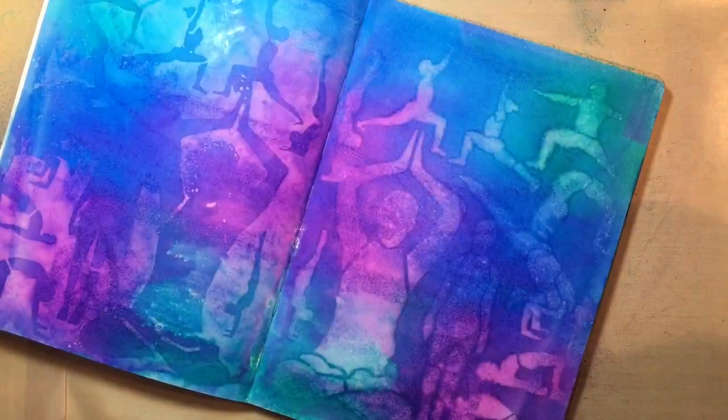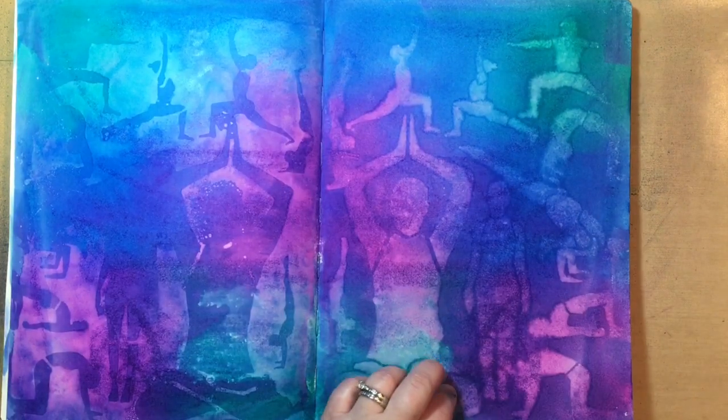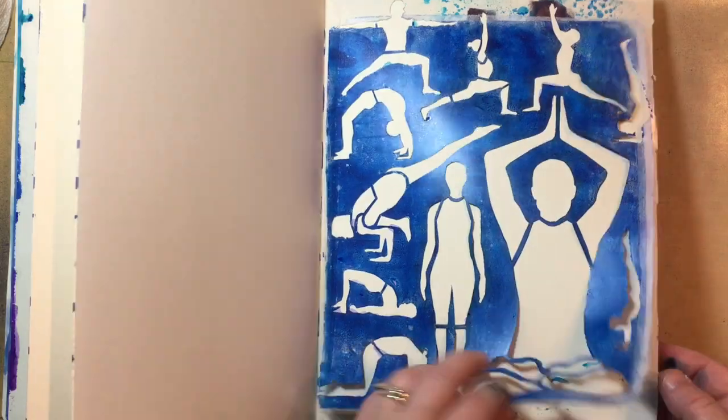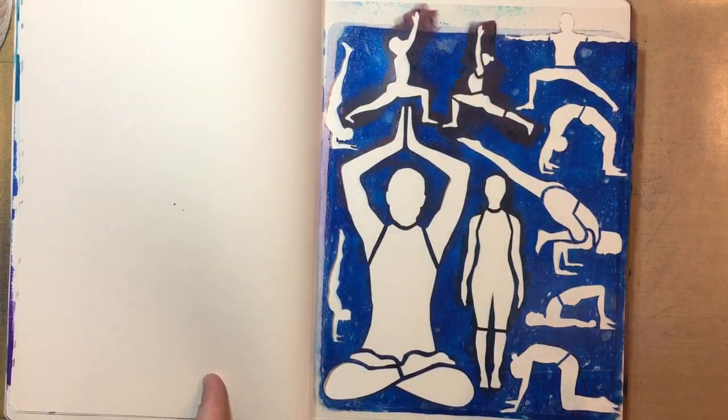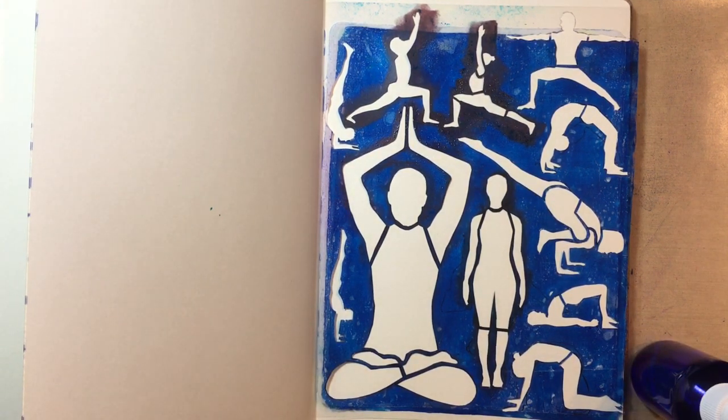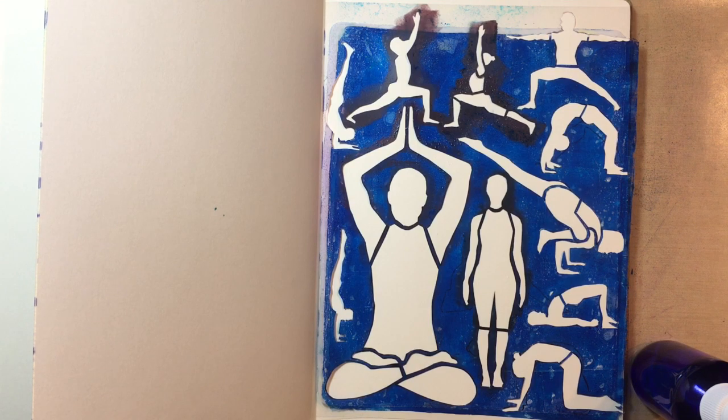Take a paper towel and roll that over the facing opposite page as well. Flipping to a later page in the journal, putting the stencil in there, misting some water over it just to kind of clean off the stencil a bit.